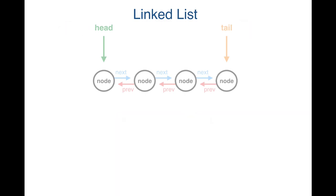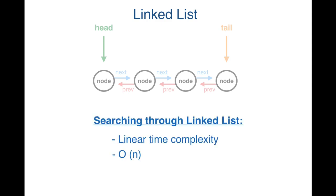Searching a linked list can be done in Linear Time Complexity, or O(n), because to find a value that we are looking for inside of our linked list, in the worst case scenario, we would have to iterate through the entire list to find that value. So as our linked list grows in size, the time that it takes to run our search function will grow proportionally to the size of our linked list. O(n) is still an acceptable and efficient time complexity.